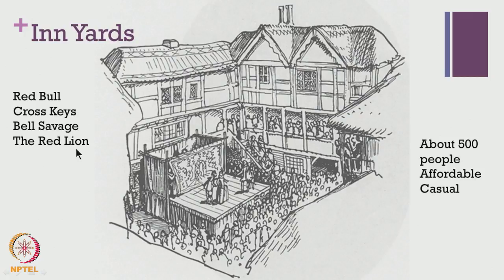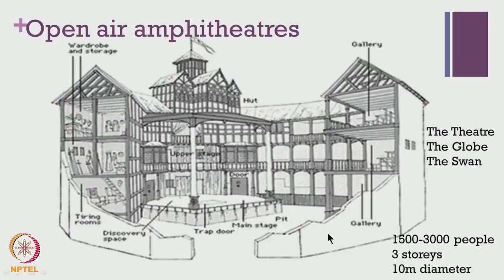The open-air amphitheatres were an elaborate structure and have come to represent the most common form of Elizabethan theatre. The prominent ones were the Theatre, the Globe, and the Swan. These were very elaborate and huge, capable of housing about 1500 to 3000 people at the same time. They were built as three-storied structures and were about 10 meters in diameter. They were not always built in the centre of the town — in order to escape rules and regulations imposed by the London government, they used to be in the outskirts of the city. If we do a quick survey of Elizabethan drama, this is perhaps the most prominent image that would come to mind, and we will be taking a look at the different parts and structures of the theatre in detail shortly.